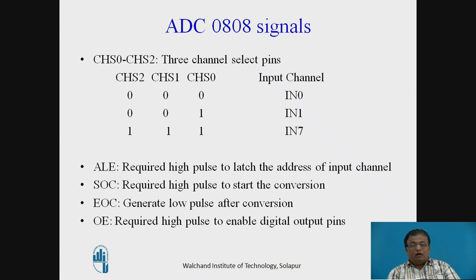There are 8 analog input channels from IN0 to IN7 and their addresses are shown in the table. If all three channel select lines are 0-0-0, input channel 0 will be selected. For 0-0-1, input channel 1 will be selected. And if all three lines are 1-1-1, then input channel 7 will be selected.